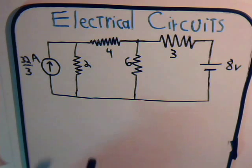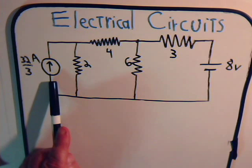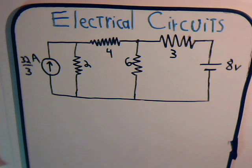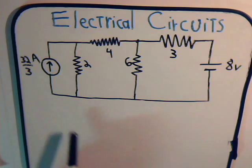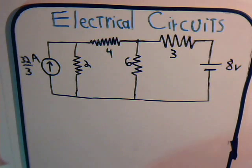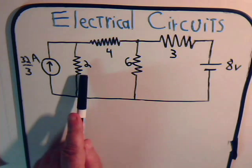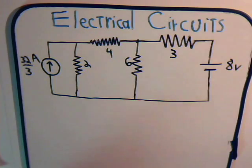First thing we notice is that here we have a resistor that's in parallel with the current source. We could redraw this part of the circuit where this resistor would be in series with a voltage source, where the magnitude of the voltage source is equal to the product of this resistance and that amount of current.